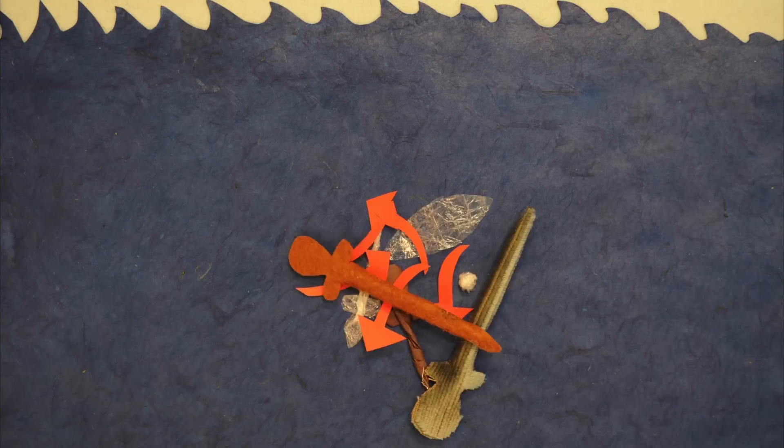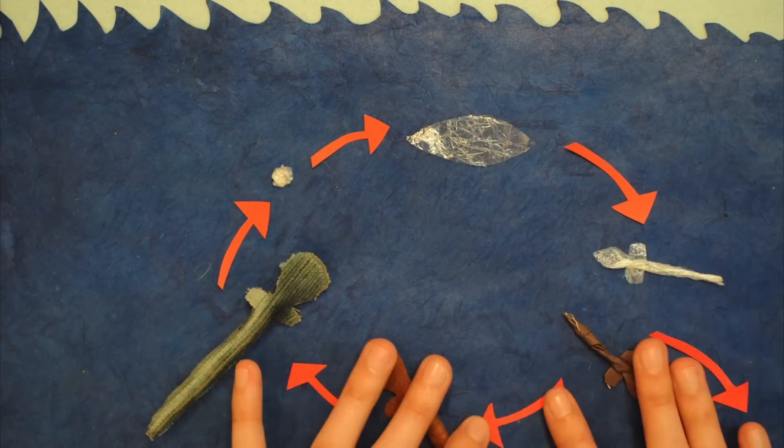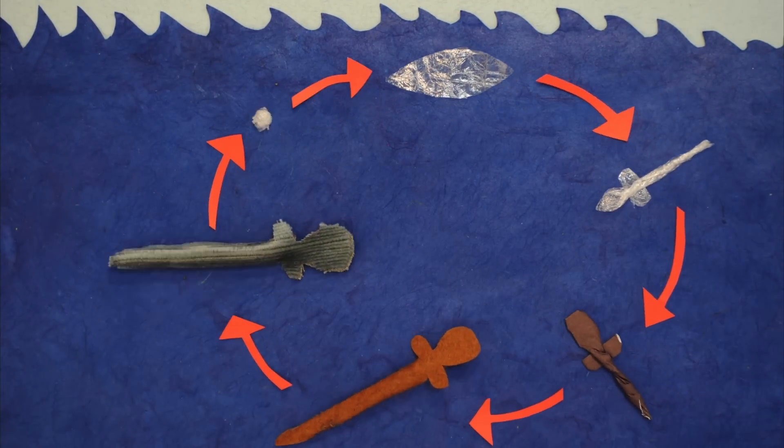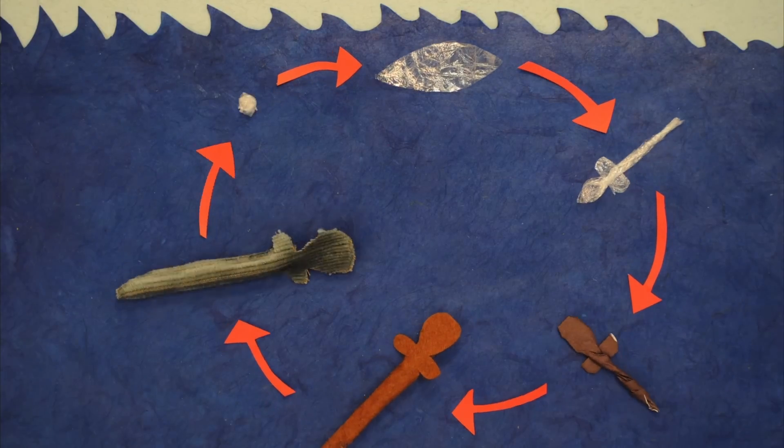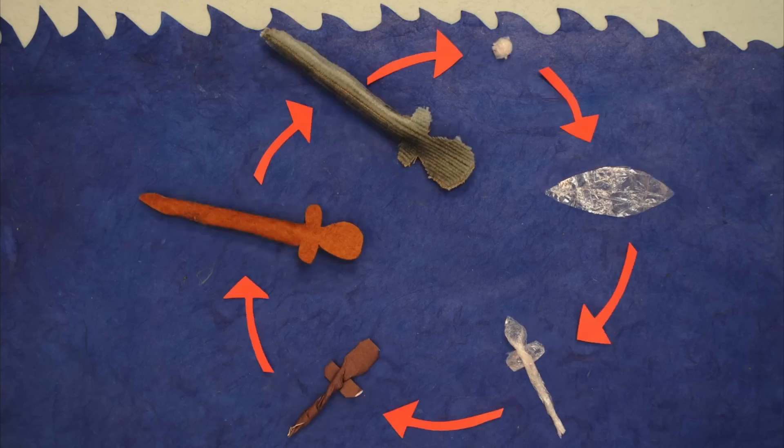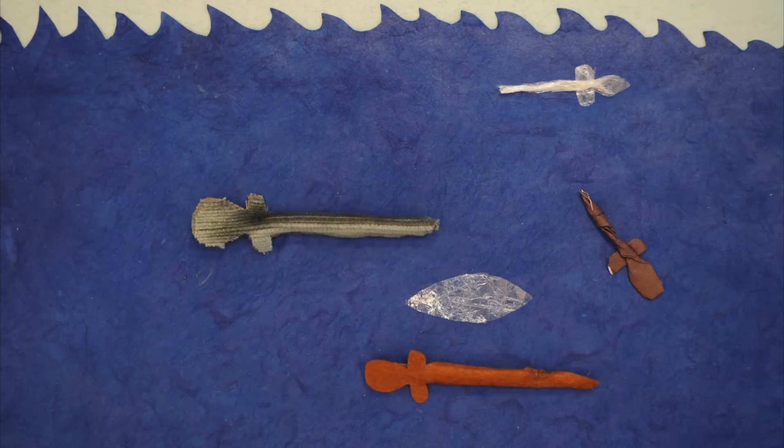Despite centuries of investigation, scientists are still attempting to answer key questions about the European eel's life cycle and behaviour. One thing we do know is that every eel in Europe has travelled a very long distance to get there. Generations before it have overcome huge odds in order to complete their mysterious life cycle and undertake one of the world's greatest unseen migrations.